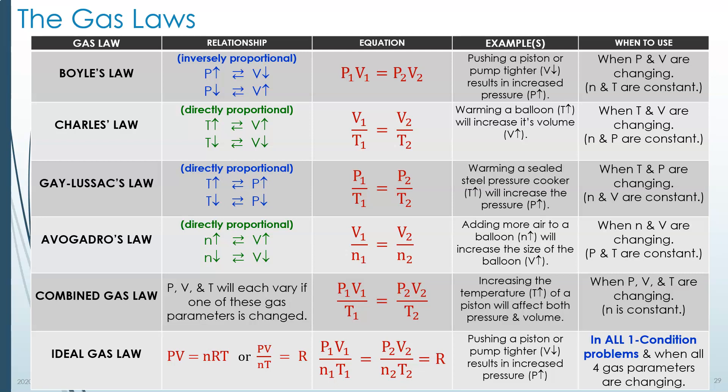But that formula, if you allow certain factors to be constant, like the two Ns, then you can cancel the Ns. And if you have a constant temperature, you can cancel the two Ts, and you will be left with Boyle's Law up above: P1V1 equals P2V2.